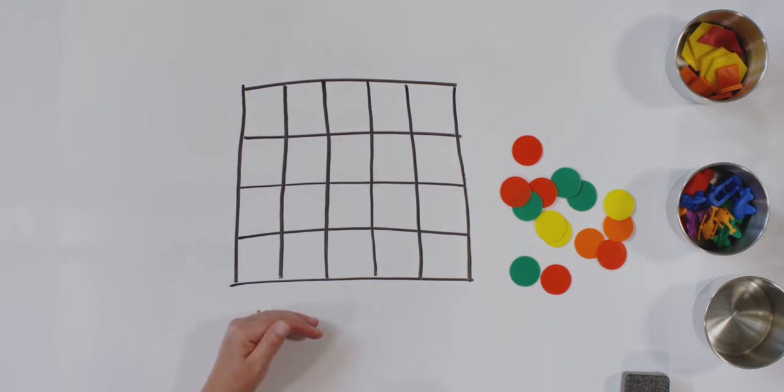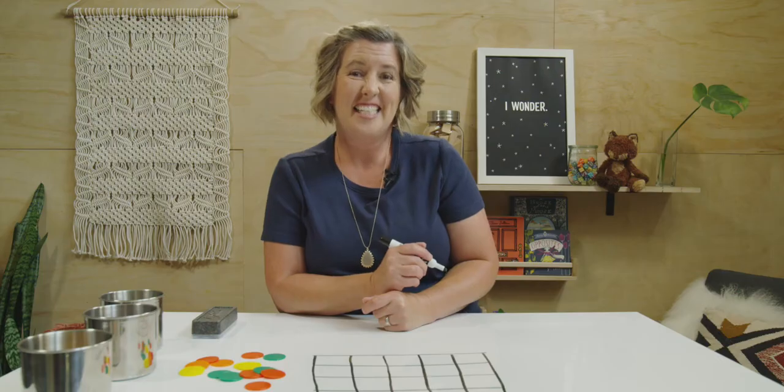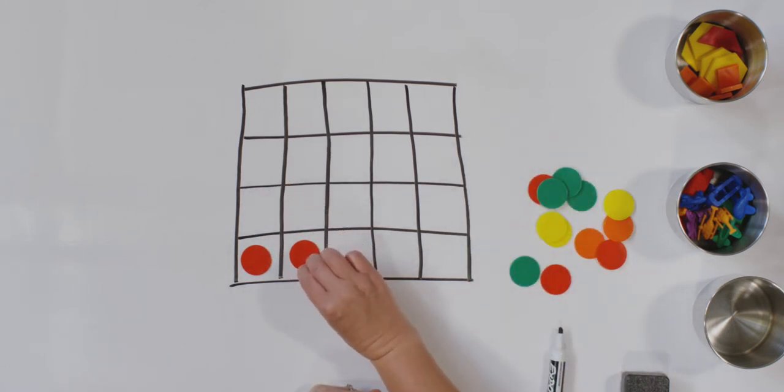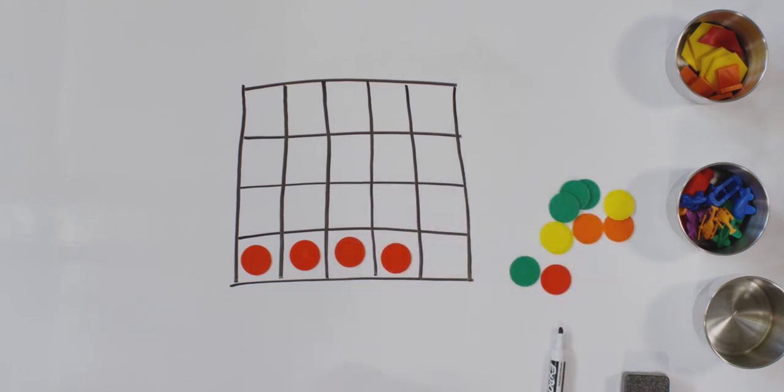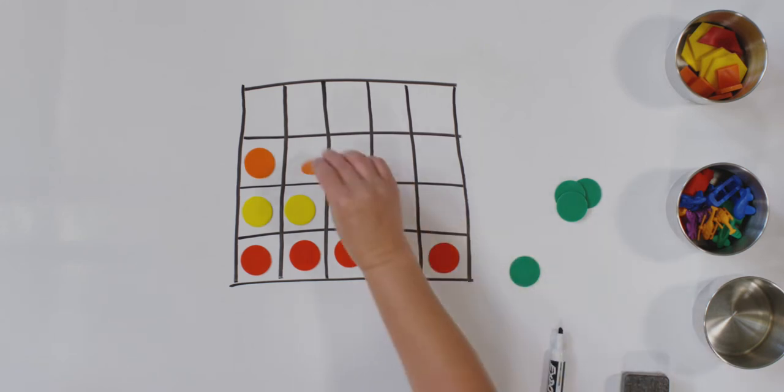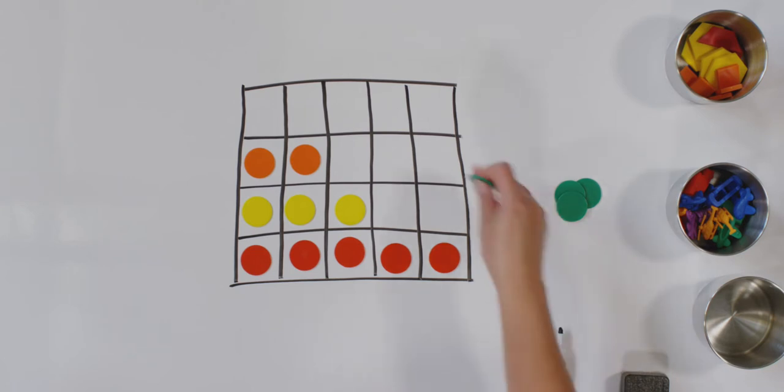But instead of making our graph from the bottom to the top, today we are going to graph from the left to the right. This is important. We're always going to start from the left to right, just like we read left to right. Let's start with red. I will start with my first red circle at the bottom. And remember, I'm not going up. I'm going to the right. Put one red circle in each square. Let's do yellow. Then I will put my yellow circle. And let's do orange. Oh, I forgot a red. Let's put my orange in.